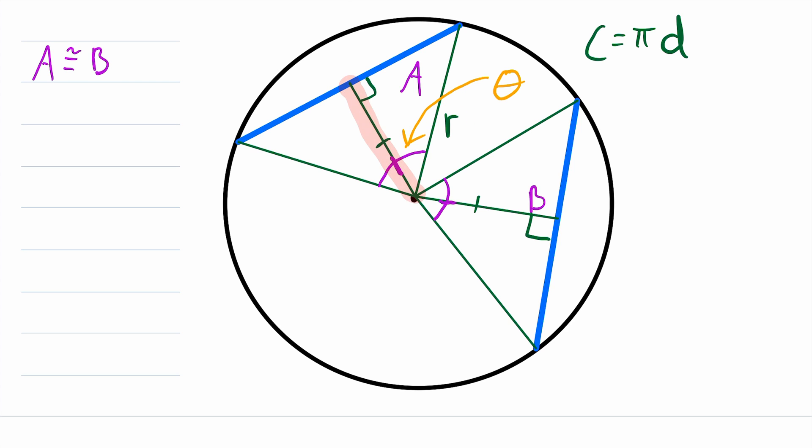Now notice that this segment that goes from the center of the circle to the chord splits this triangle into two right triangles. Then, since they're both right triangles, we can conclude that they're congruent by the hypotenuse leg postulate, because we know that their hypotenuses are congruent because they're both radii of the same circle, and they have this leg in common. So they are congruent by the hypotenuse leg postulate.